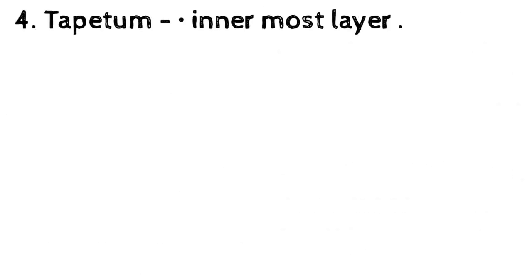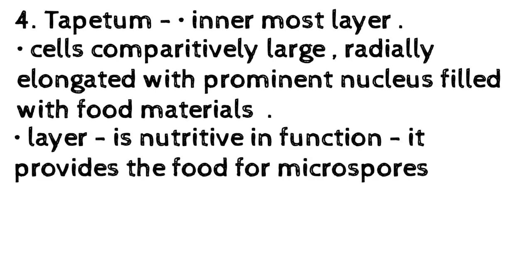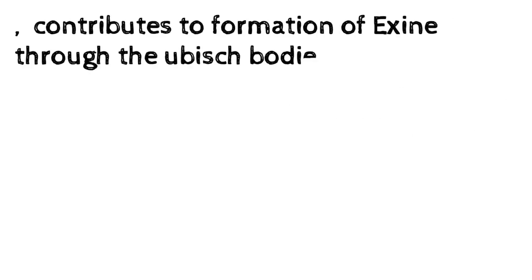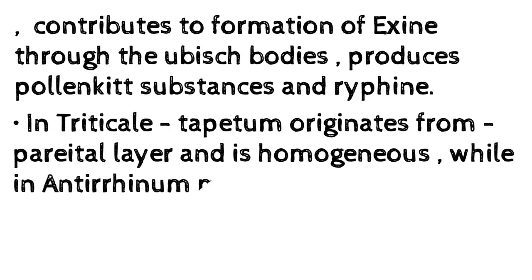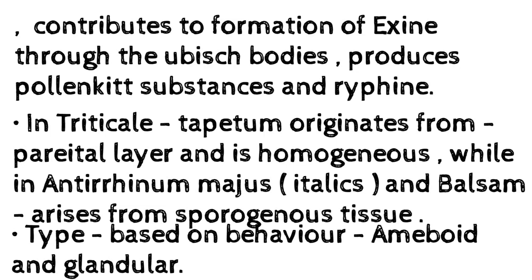4. Tapetum — the innermost layer. Cells are comparatively large, radially elongated with a prominent nucleus, filled with food materials. This layer is nutritive in function; it provides food for microspores, acts as a nutritive sac, and acts as a pathway for the conduction of food to the sporogenous tissue from outside. It also contributes to the formation of exine through the Ubisch bodies, and produces pollenkit substances and sporopollenin. In Triticum, the tapetum originates from the parietal layer and is homogeneous, while in Antirrhinum majus, italics, and balsam it arises from sporogenous tissue.